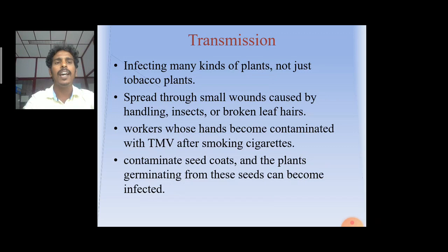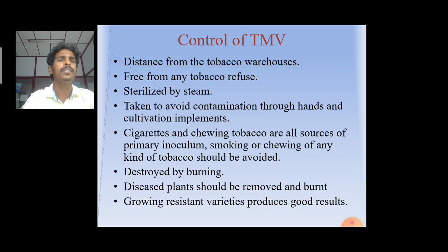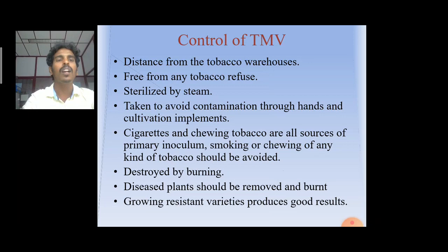Control of TMV: maintain distance from tobacco warehouses and keep areas free from any tobacco refuse. Sterilize by steam and take care to avoid contaminating through hands and cultivated implements. Cigarettes and chewing tobacco are all sources of primary inoculum, so smoking or chewing any kind of tobacco should be avoided. Diseased plants should be removed and burned. Growing resistant varieties produces good results.